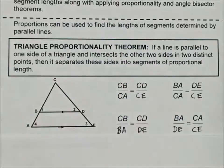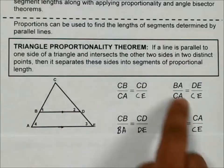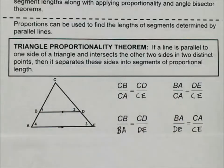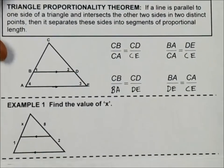And then BA over DE is going to be equal to CA over CE. So all I did was, these are four different ways that I could split up these sides. This is going to be very important when we start working through some of these problems, especially a problem like this first one.